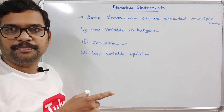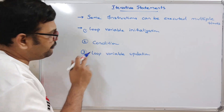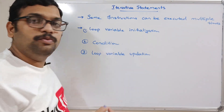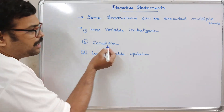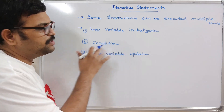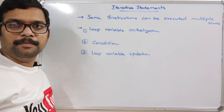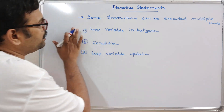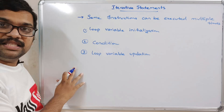For termination we write some condition, and for every iteration we need to update the loop variable so that at a particular time the condition becomes false, and the instructions will automatically stop executing. Whatever iterative statements we are using, we have to follow these three things.